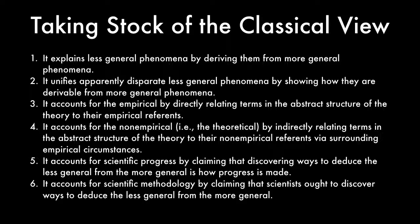At the beginning of the lecture, we looked at a number of things that scientific theories attempt to do as components of a standard picture of scientific theory. Let's take a look at the classical view in terms of these things. The classical view explains less general phenomena by deriving them from more general phenomena, so it is explanatory. It unifies apparently disparate less general phenomena by showing how they're derivable from more general phenomena, so it's unificatory. It accounts for the empirical by directly relating terms in the abstract structure to their empirical reference. It accounts for the theoretical by indirectly relating terms to their non-empirical reference via surrounding empirical circumstances. It accounts for scientific progress by claiming that discovering ways to deduce the less general from the more general is how progress is made. And it accounts for scientific methodology by claiming that scientists ought to discover ways to deduce the less general from the more general. So, in terms of our standard picture of what a scientific theory ought to do, it seems as though the classical view looks pretty good.